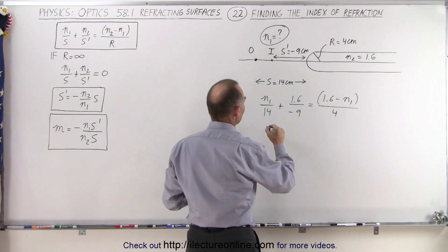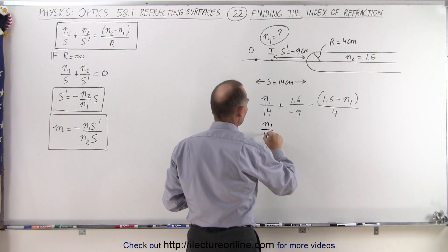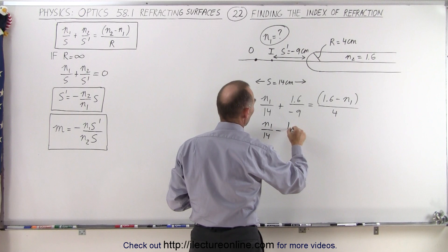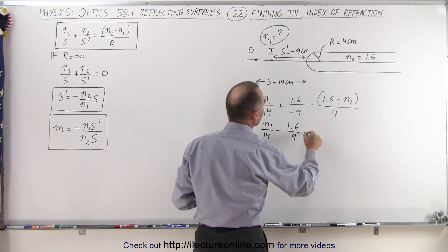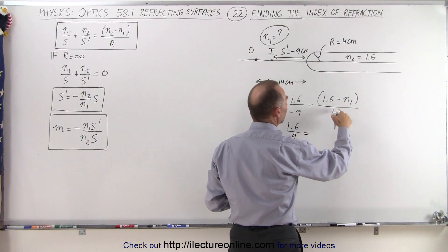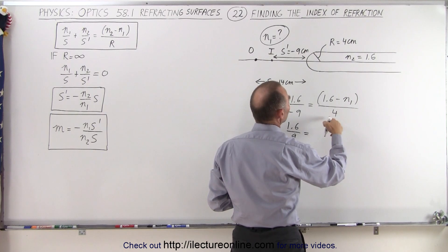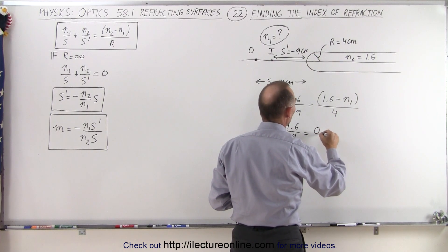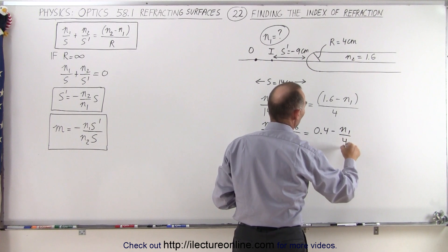Alright, simplifying this a little bit, this becomes n1 over 14 minus 1.6 over 9 equals, dividing the denominator into the numerator, 1.6 divided by 4 is 0.4 minus n1 over 4.